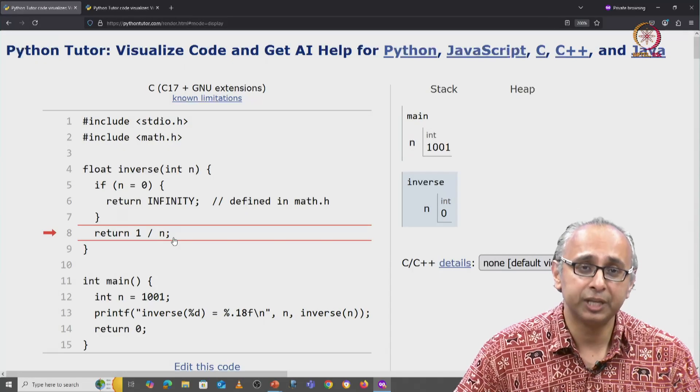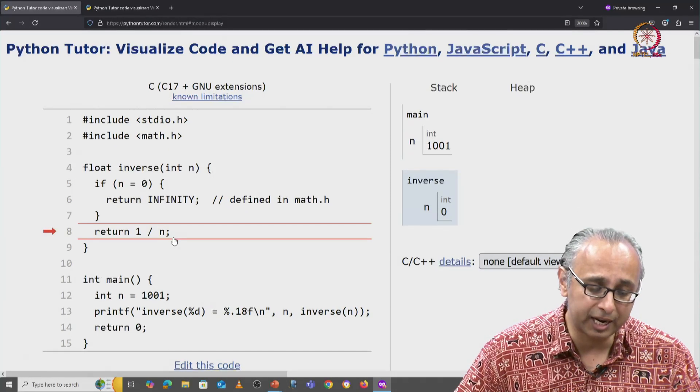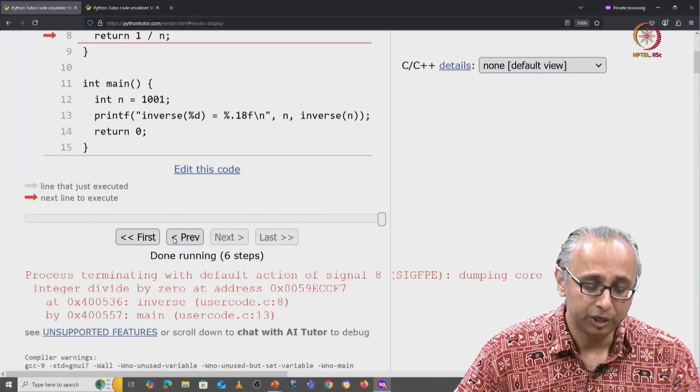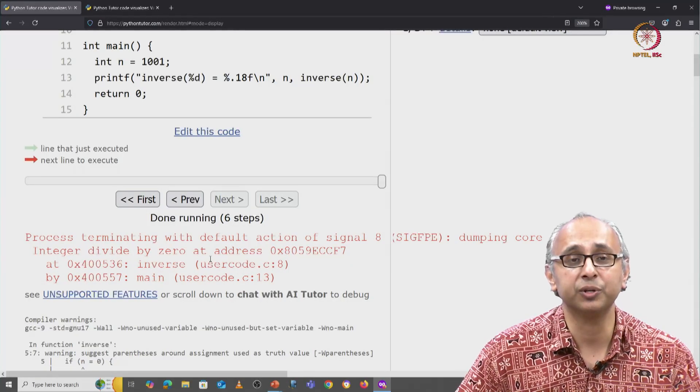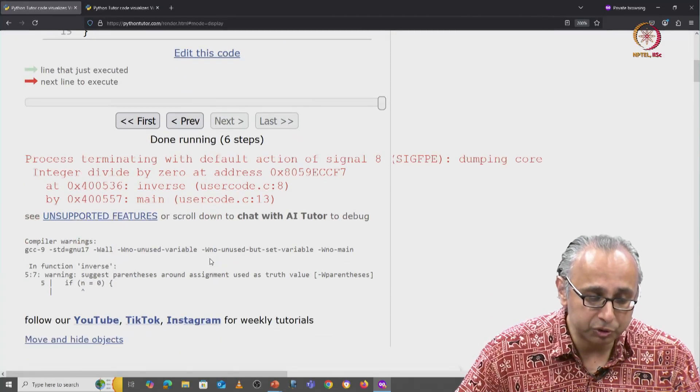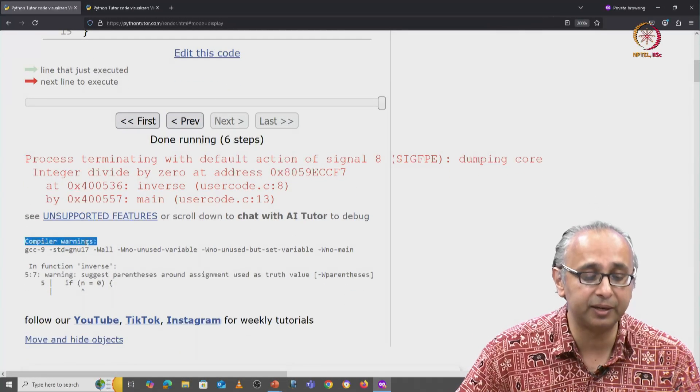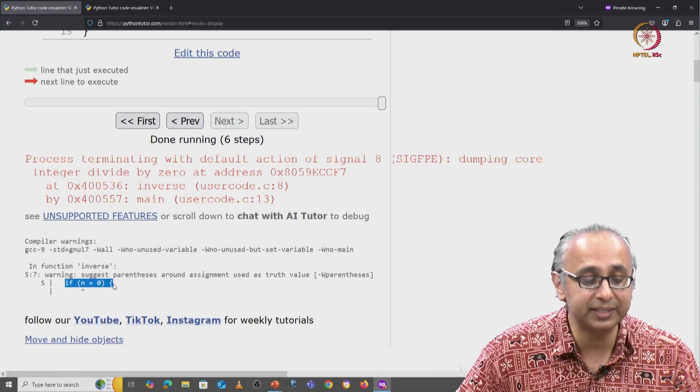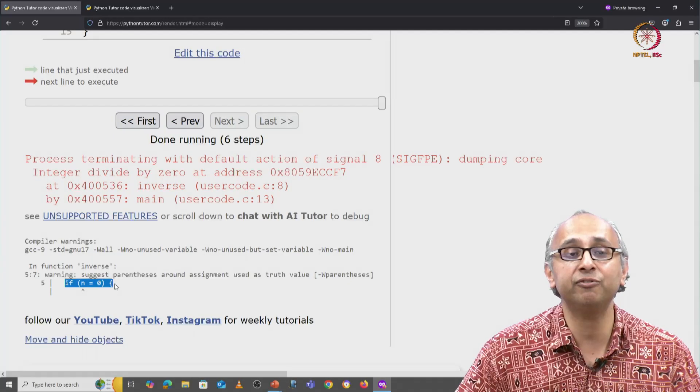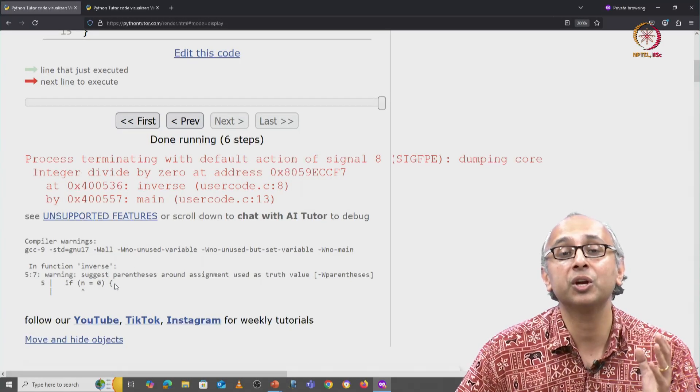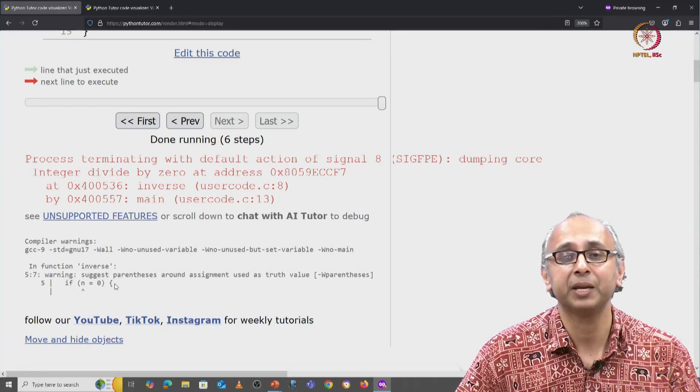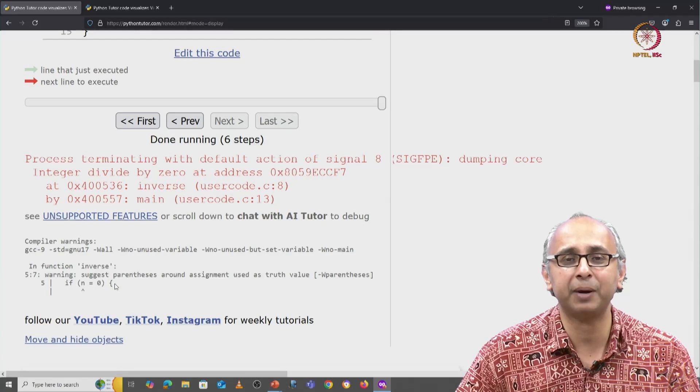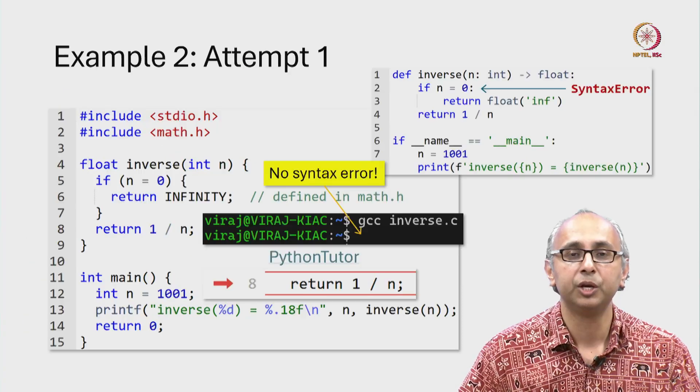Now I want to tell you that if you scroll down carefully, you will see the error message. But you will also see some compiler warnings and one of those warnings is telling you that this statement on line 5 is perhaps not what you meant. Let's take a closer look at this compiler warning.